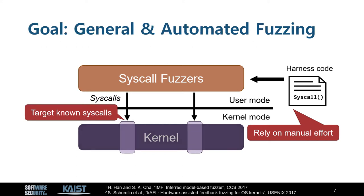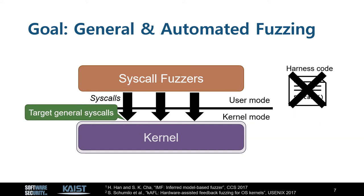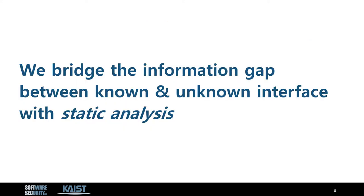Our goal is to enable general and automated syscall fuzzing in Windows. We do not target a specific syscall but target general syscall interfaces. Also, we want our system to run without harness code to enable automated syscall fuzzing. To achieve this goal, we bridge the information gap between the known interface and unknown interface by using static analysis.